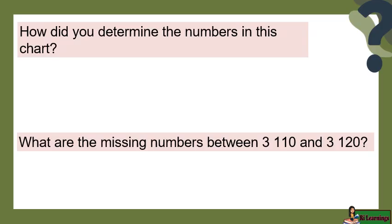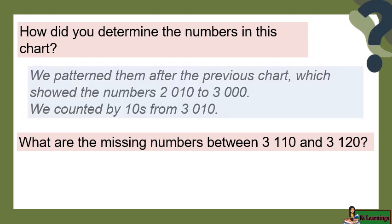How did you determine the numbers in this chart? We patterned them after the previous chart, which showed the numbers 2,010 to 3,000. We counted by 10s from 3,010. What are the missing numbers between 3,110 and 3,120?